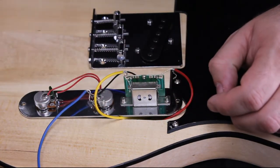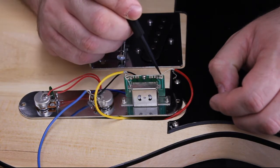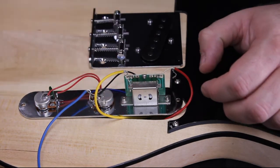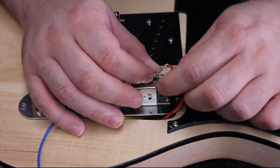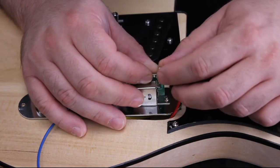Again, there are two soldered connections. Take the ground wire and place it in the hole on the side of the housing and solder in place.